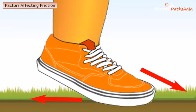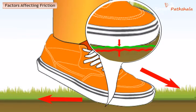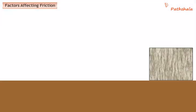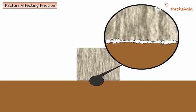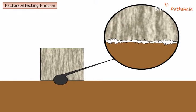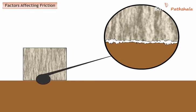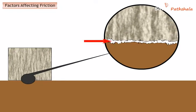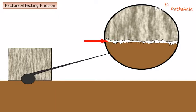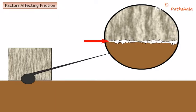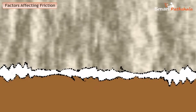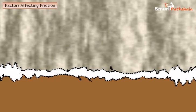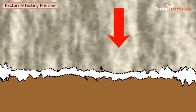Friction is caused by the irregularities of the two surfaces in contact. The surfaces which appear very smooth also have a large number of minute irregularities on them. These irregularities on the two surfaces lock into one another. When we attempt to move any surface, we have to apply a force to overcome interlocking.